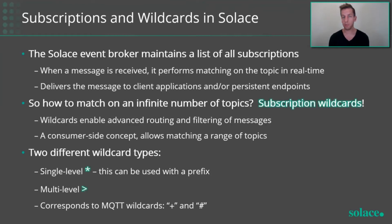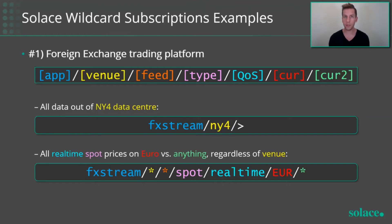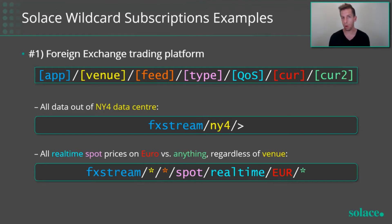Going back to our use cases, let's look at some examples. For our FX trading platform, say all the data published out of NY4 is tagged that way. With a multi-level wildcard, you can subscribe to all data coming out of that venue regardless of feed handler, quote type, or other data attributes — useful for funneling everything into a regulatory database. Or you could create a very specific subscription to listen to all spot quotes in a real-time feed for euros against any currency across your entire global platform, regardless of venue or feed handler, using the single-level wildcard.